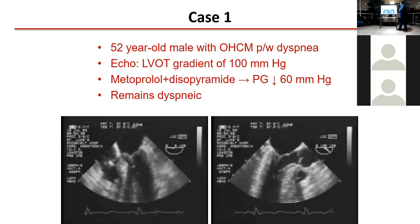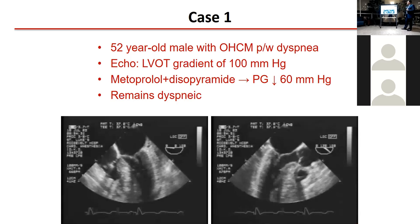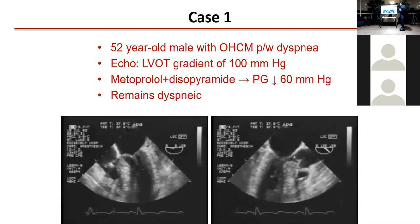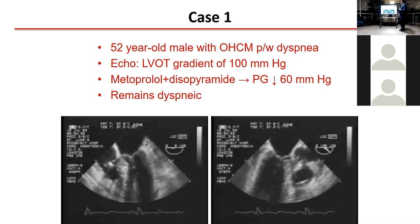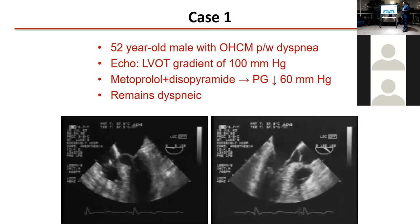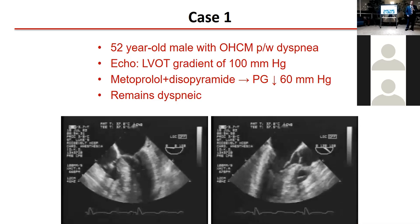Before we start, I've included a few cases here to break the ice. This is a 52-year-old male with obstructive hypertrophic cardiomyopathy who presents with dyspnea. His echo shows a gradient of 100 millimeters of mercury. The patient was treated medically and the pressure gradient dropped down to 60, but the patient remains short of breath. Any thoughts? Any comments on those images?